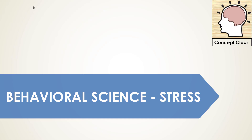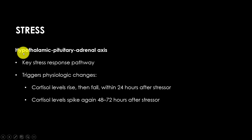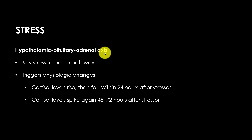Hello everyone. Today in this lecture we are going to talk about stress. We do know that there is a correlation between stress and illness. Stress is related to the hypothalamic pituitary adrenal cortical axis pathway, and this pathway is considered to be the main pathway for stress. Once stress occurs, it will trigger certain physiological changes in our body, which I'm going to discuss later on.